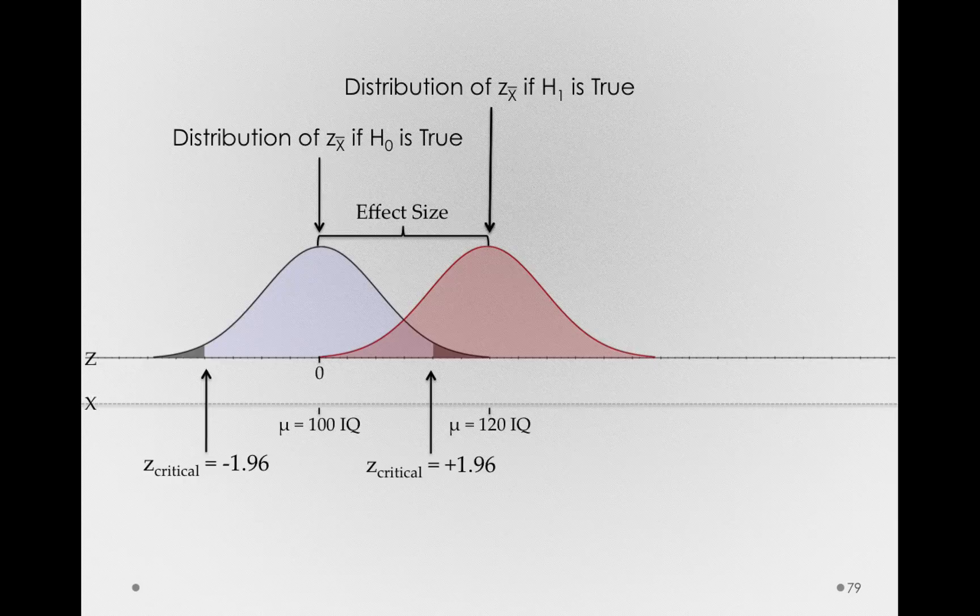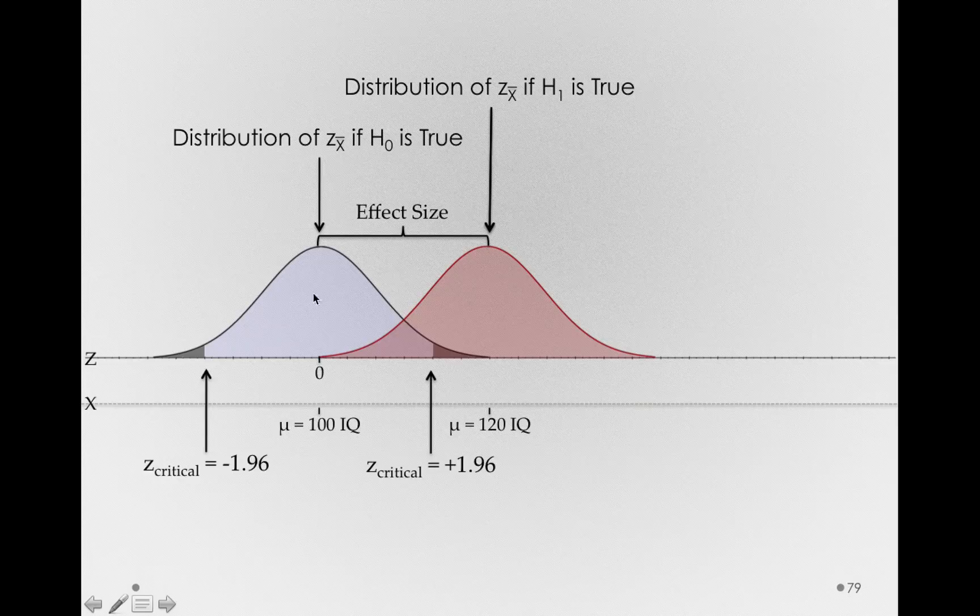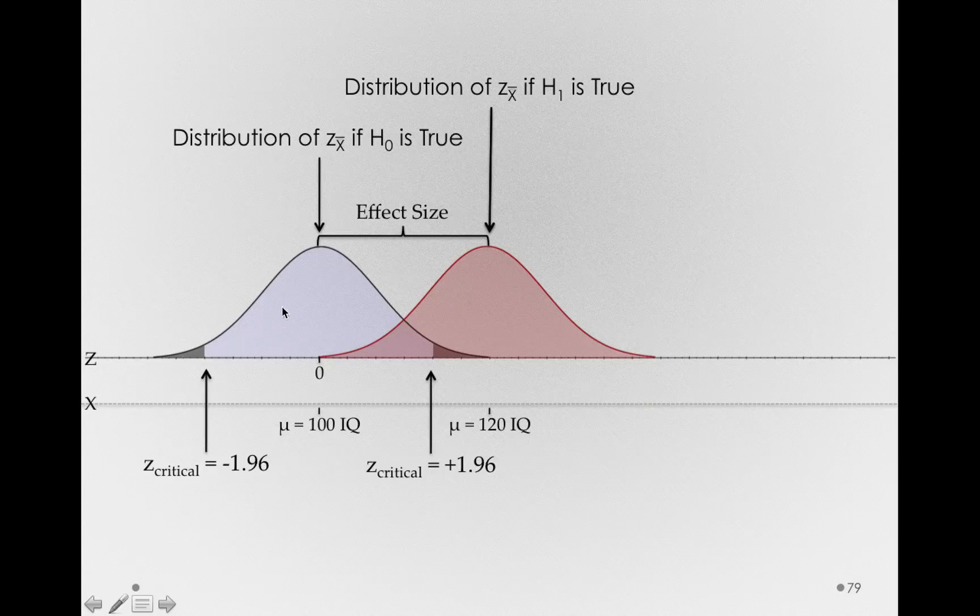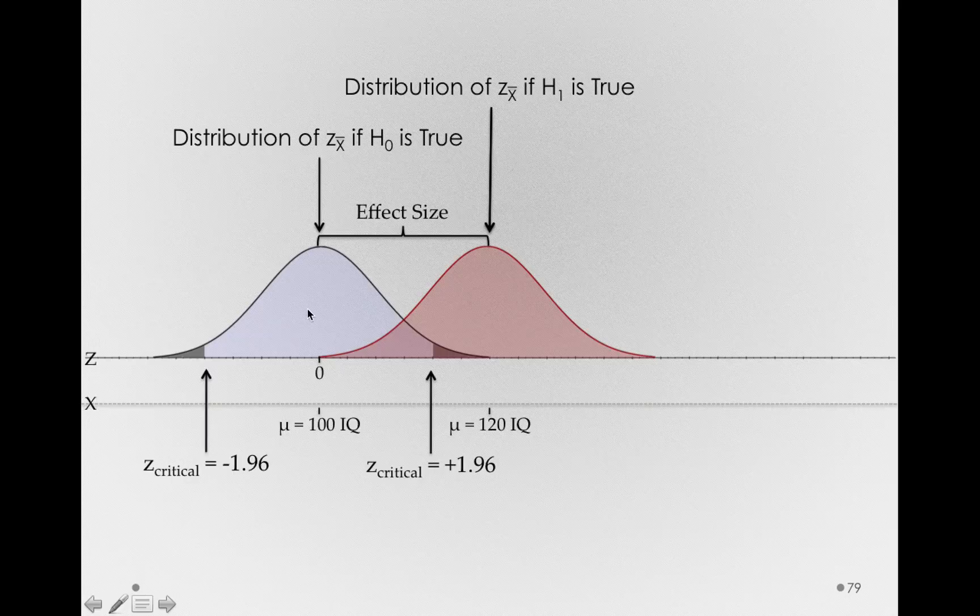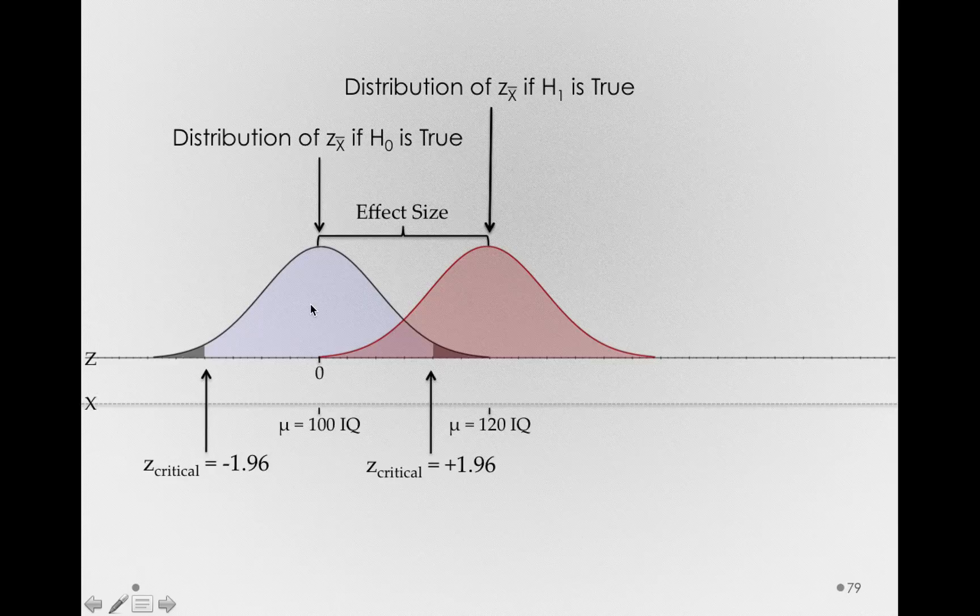Now let's think about what will happen in this situation. Let's go back to the blue distribution. Remember, the blue distribution is what we start with as researchers. We don't have knowledge of the red distribution. The only reason we can see it here is because we're playing make-believe as a pedagogical tool, so we can visualize what statistical power is. But when we start the experiment, we start it with the idea that we're taking a sample from this blue distribution, and that's where we get our critical regions.